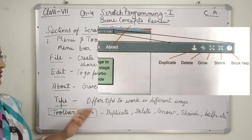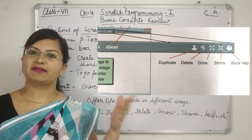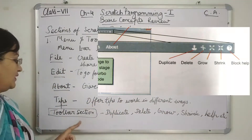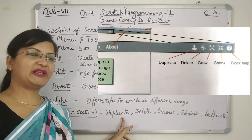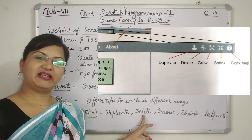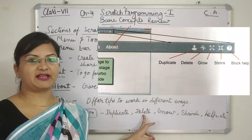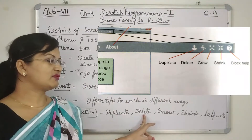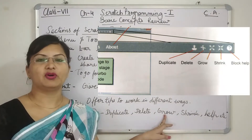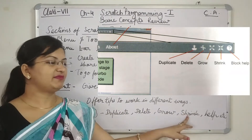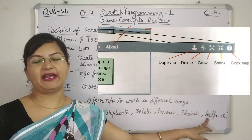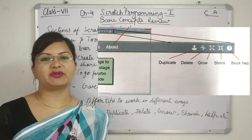In the Toolbar Section at the top right, you will find tools. On the left side are menus; on the right side are tools. The tools include: Duplicate — to duplicate a selected item; Delete — to delete a selected item; Grow — to increase the size of a selected object; Shrink — to reduce the size of an object; and Help — to get help related to a particular block.